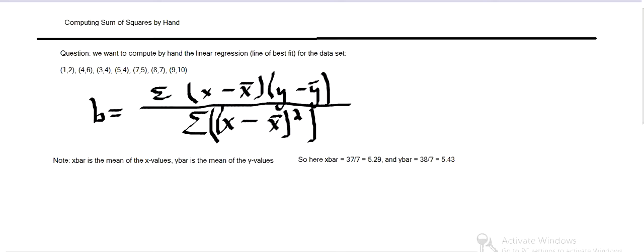And then now we want to do the top, we want to take each x value minus the x mean, and each y value minus the y mean. So 1 minus 5.29 times 2 minus 5.43. Then the second one, 4 minus 5.29 times 6 minus 5.43, and then so on. We can simplify that. So after we add them up, it's 38 about.